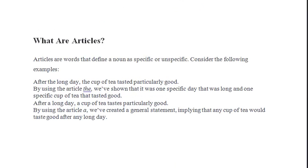Articles are words that define a noun as specific or unspecific. The article in English is the definition of the noun we're going to talk about. We're going to be specific and we're going to be unspecific. Consider the following examples so you can understand what we're going to talk about.